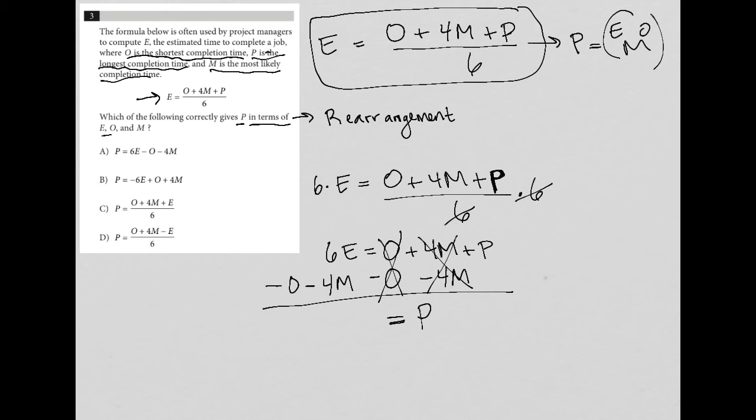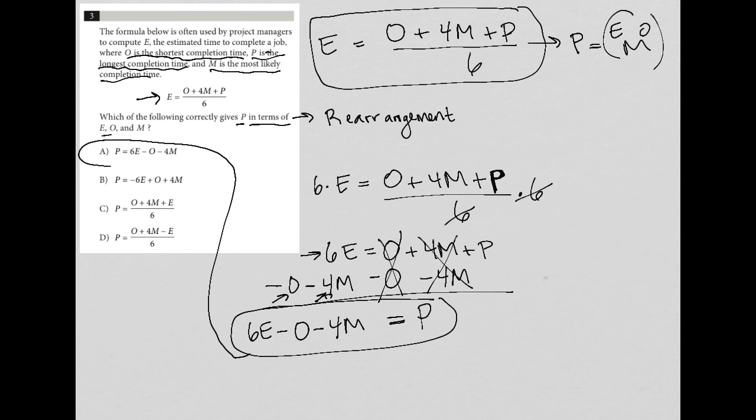So what do I have left on the left-hand side? Well, I have this six E that was up there. And then I have a minus O. And a minus four M. And that's all I can do. There's no more simplification that I can use. And I circle that because my correct answer is choice A.